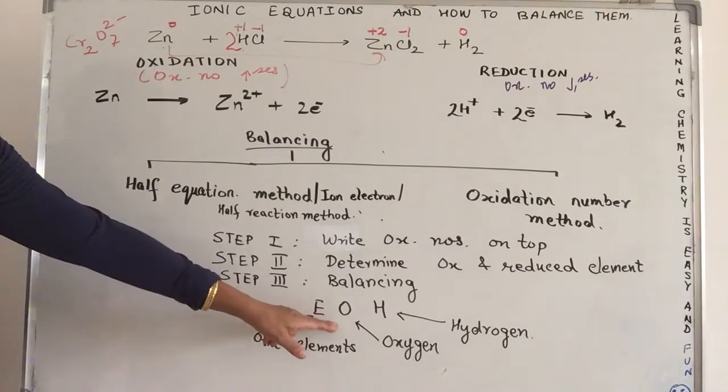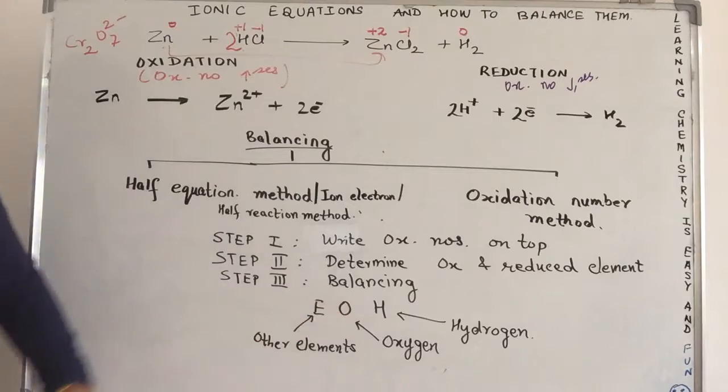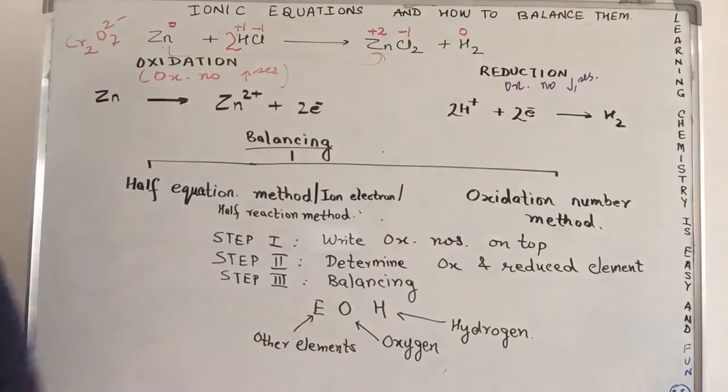E for other elements, O for oxygen, H for hydrogen. We'll first balance other elements. Elements which are other than oxygen and hydrogen. Then, we go on to balance oxygen and finally, we will balance hydrogen.